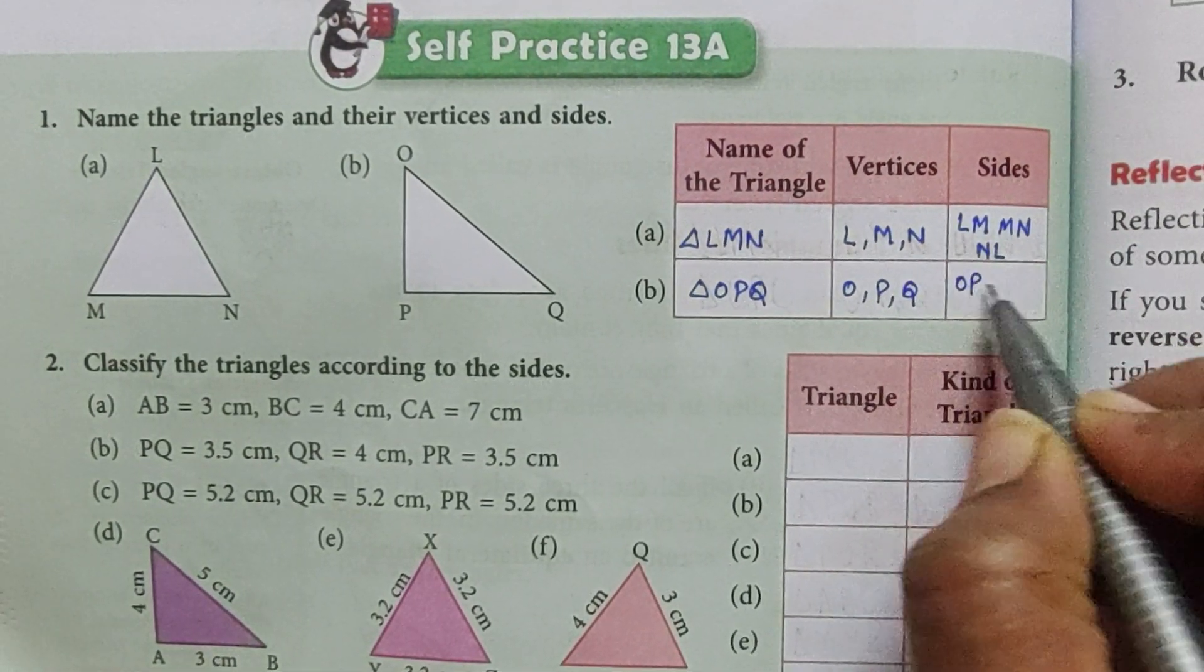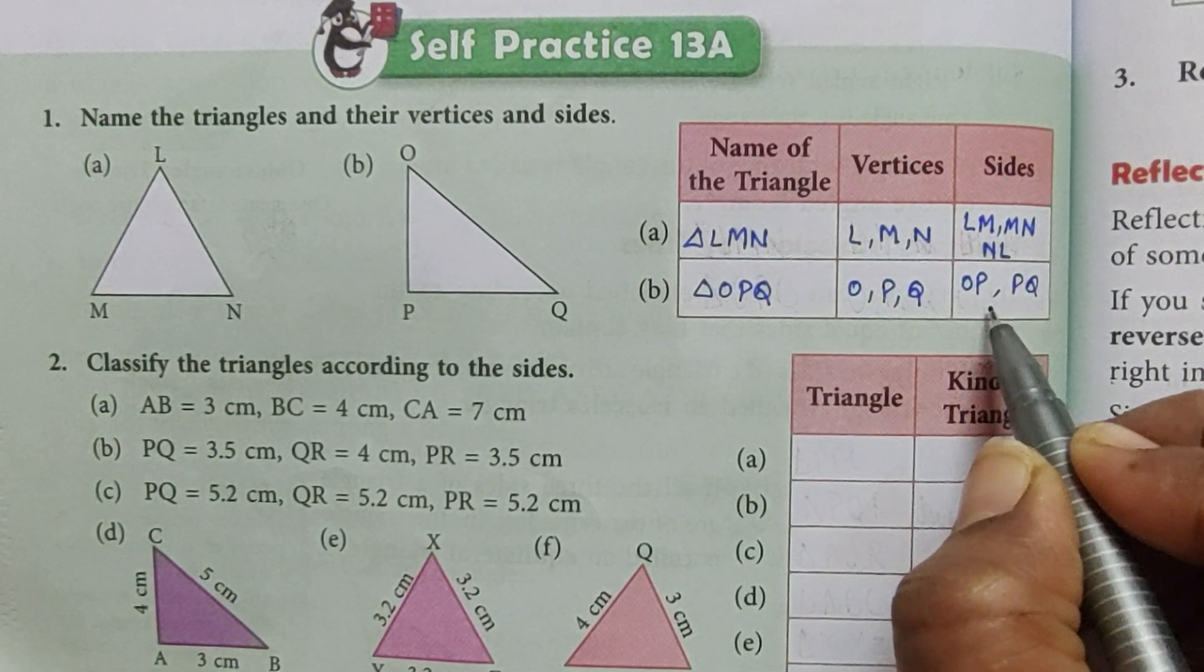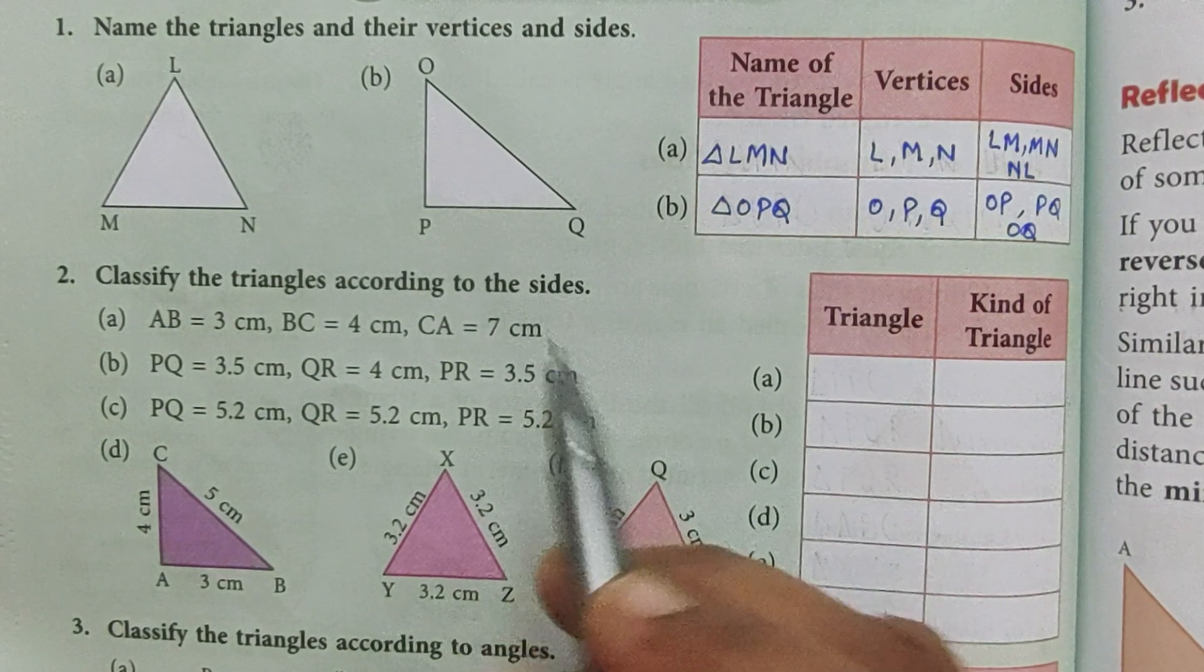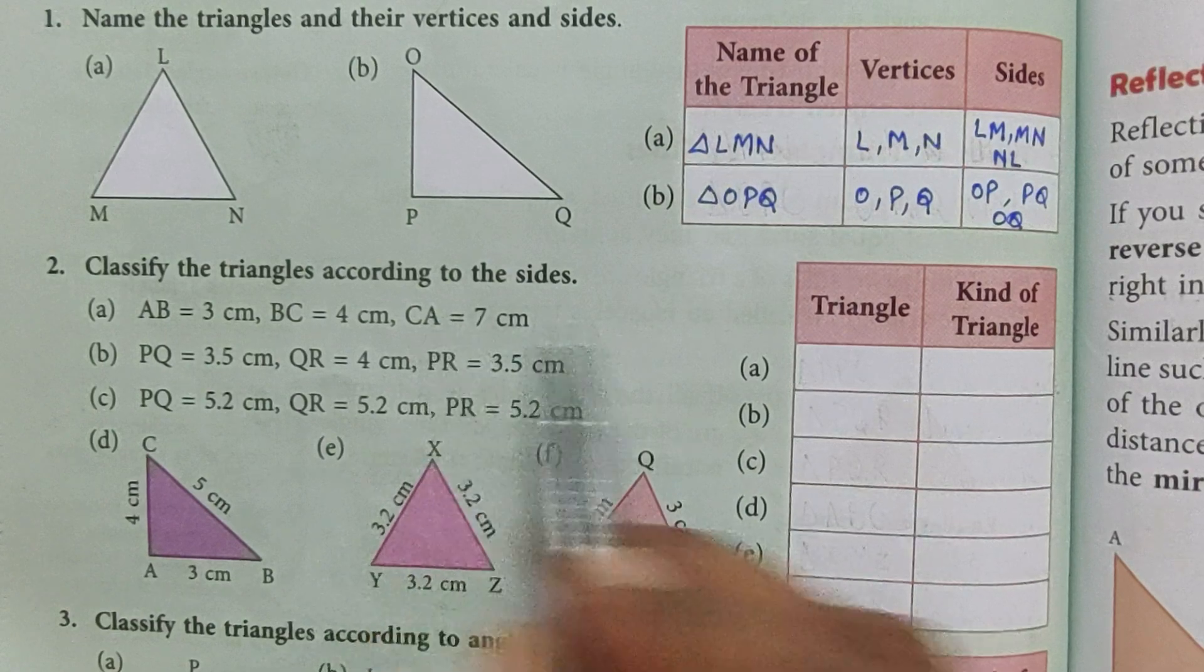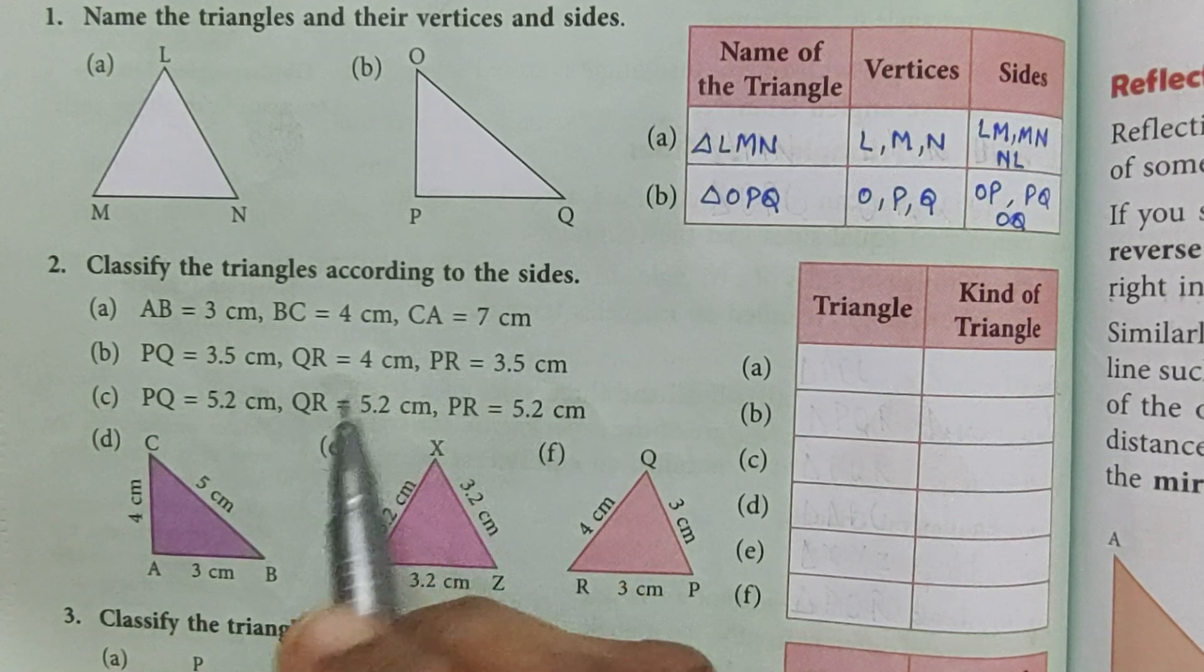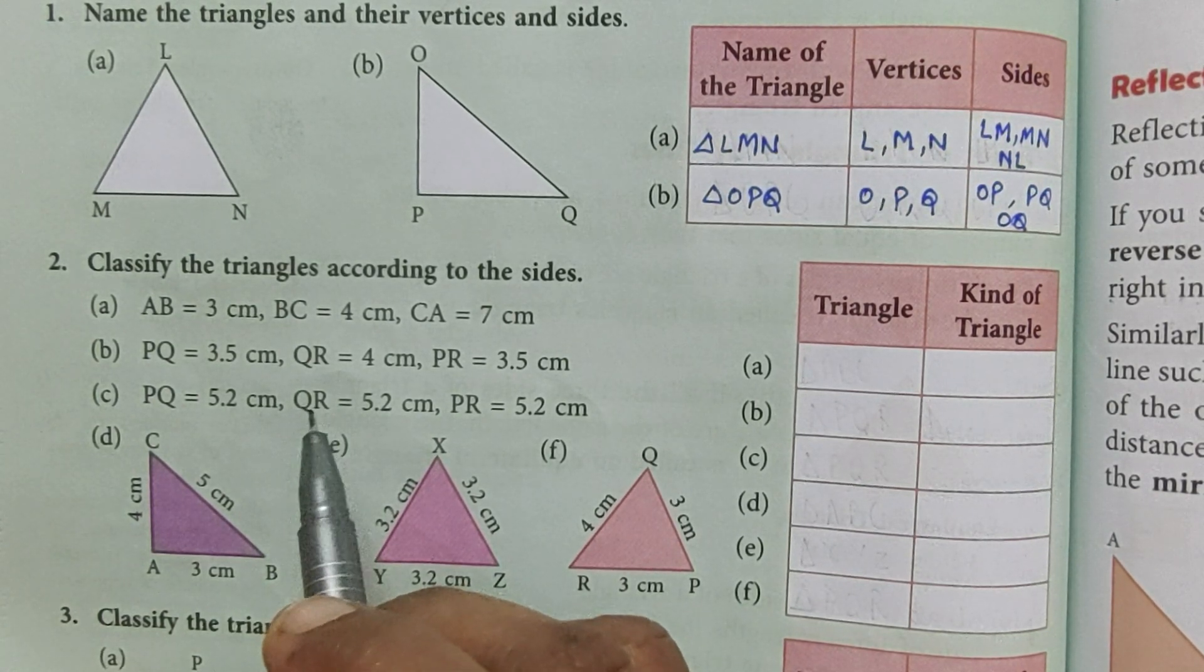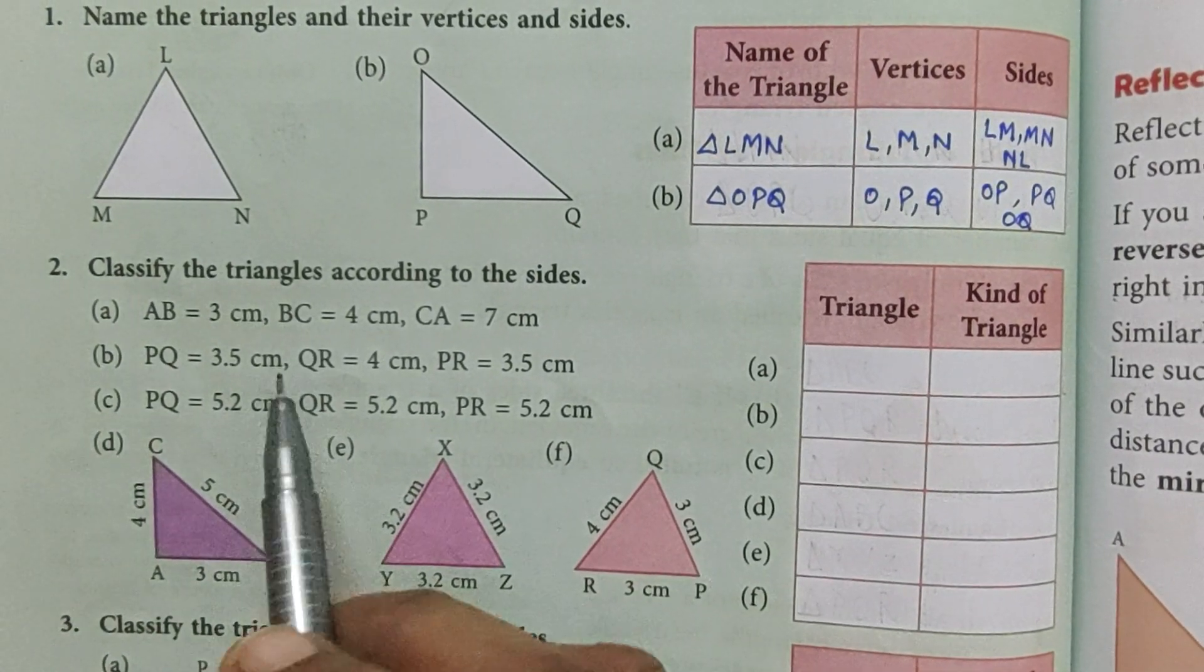Question number two, classify the triangles according to the sides. Here we will write the triangle's name and what kind of triangle it is. If all sides are equal, it's an equilateral triangle. If two sides are equal, it's an isosceles triangle. And if no sides are equal, it's a scalene triangle.